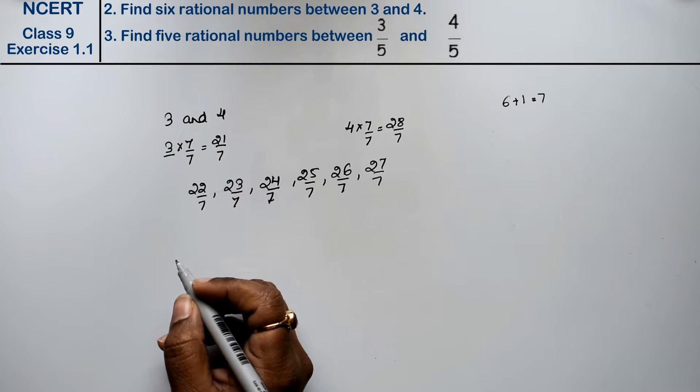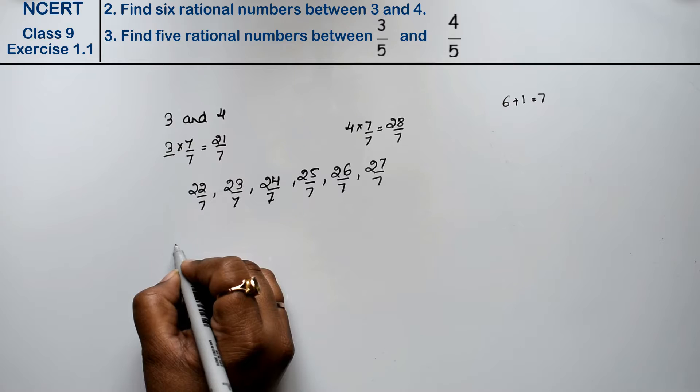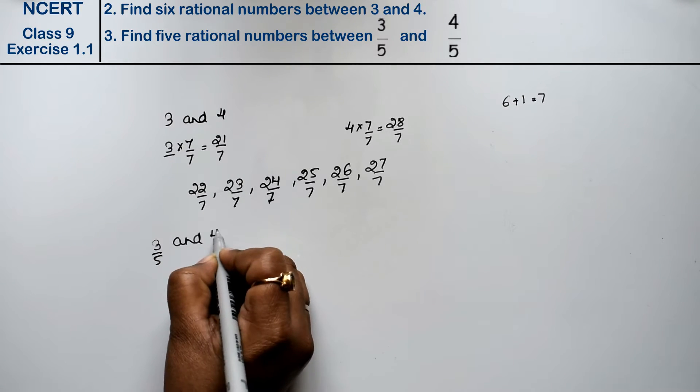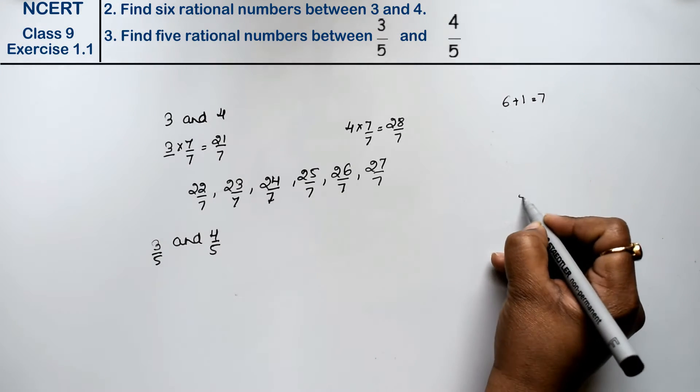Let's do third question. Question number 3 of exercise 1.1. Question number 3 is find 5 rational numbers between 3 upon 5 and 4 upon 5. Friends, we need 5 rational numbers.